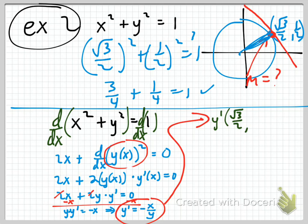Y prime is a function of both x and y, and we want the y prime at this particular point. So we get negative x — which is negative radical 3 over 2 — over y, which is 1/2.